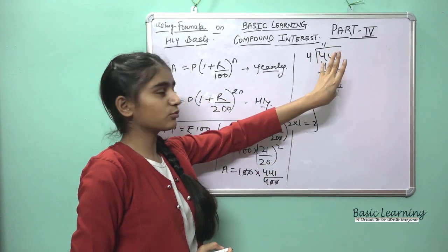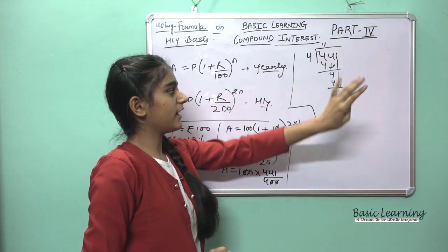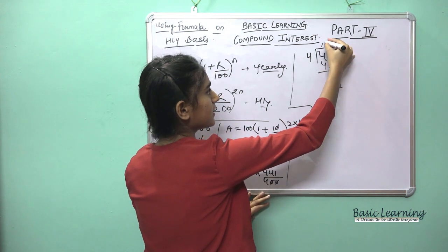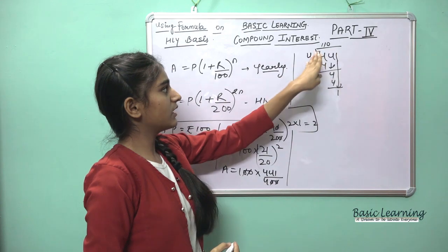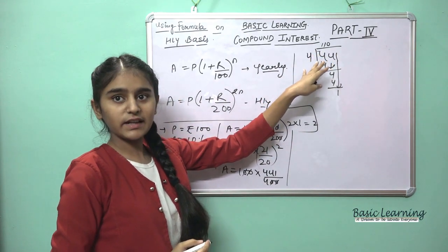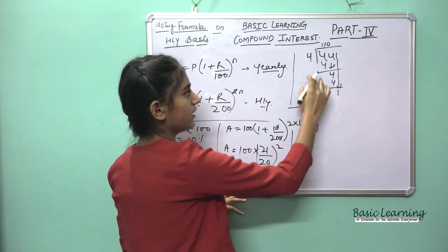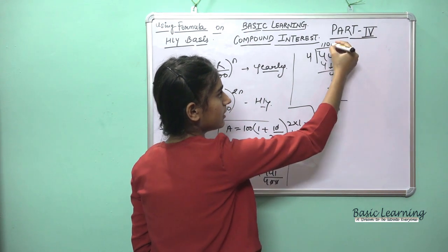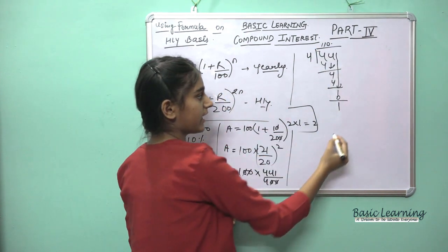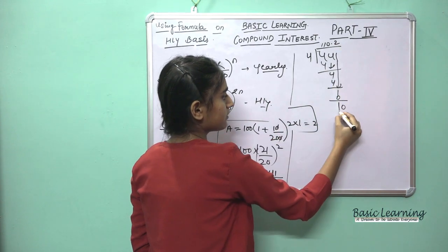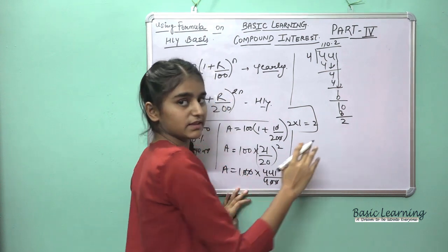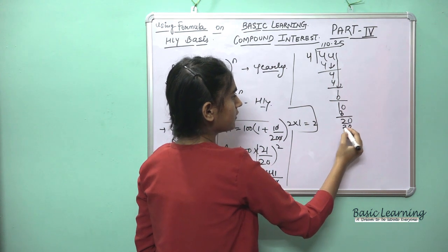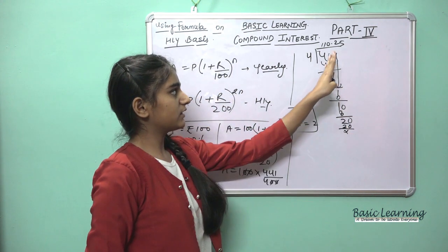Many students make the mistake of putting the decimal in the wrong place during division. We divide 441 by 4: 4 goes 0 times into 4 ones remaining, carry down — we get 110.25. The answer is Rs. 110.25.